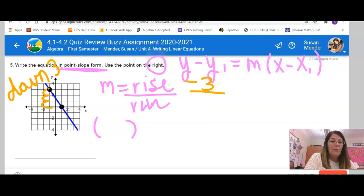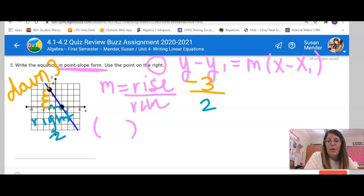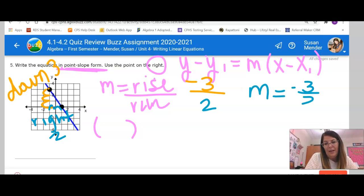So now I need to count this sideways. From this place, I went down three. One, two. And I'm going to the right, two. That's a positive two. So that means my slope, rise over run, is negative three halves.